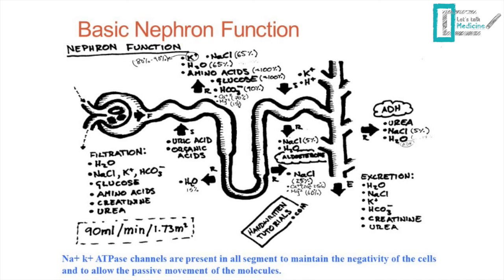In the basic nephron function, we have the glomerulus, the Bowman capsule, the PCT, the loop of Henle, the distal tubule, and the collecting tubule. The filtrate goes through the PCT, where most molecules are reabsorbed — mainly 65% of the Na, 65% of the H2O, and about 100% of amino acids and glucose. There is also reabsorption of bicarbonate, which is really important for carbonic anhydrase inhibitor diuretics.